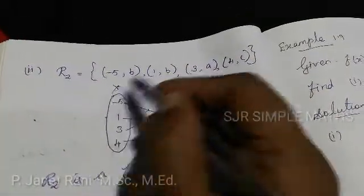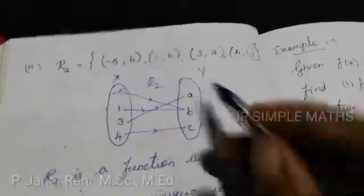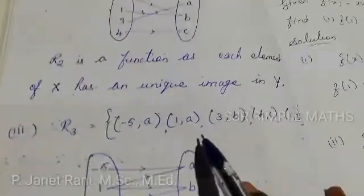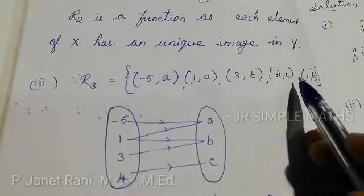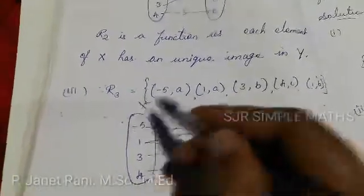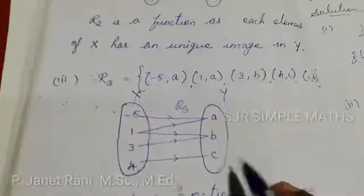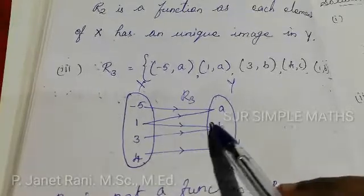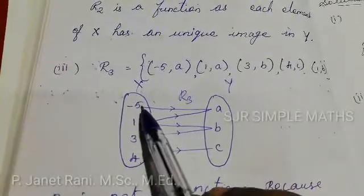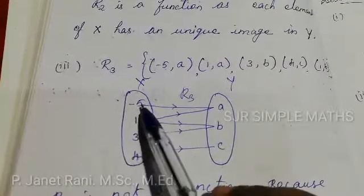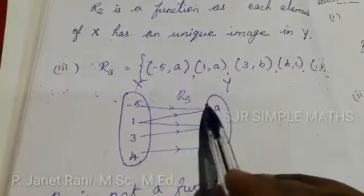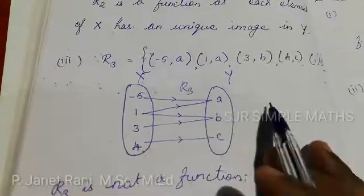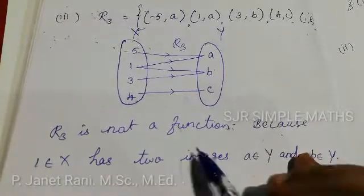For R3, we have {(-5, a), (1, a), (3, b), (4, c), (1, b)}. The element 1 has two images — both a and b. Since one element has two images, R3 is not a function.